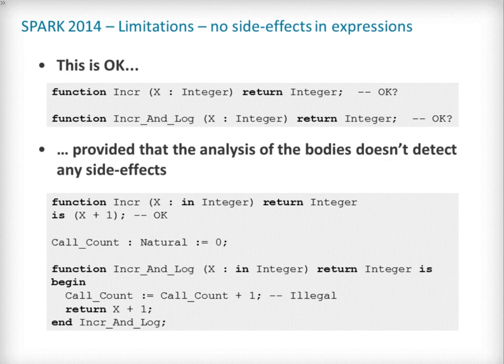When it has access to the subprogram body, the Spark tool verifies that subprograms which are functions are indeed free from side effects. Here, for example, the two functions INCRA and INCRA_ANALOG have the same signature. However, INCRA is valid Spark, while INCRA_ANALOG is not, as it attempts to update the global variable call_count.